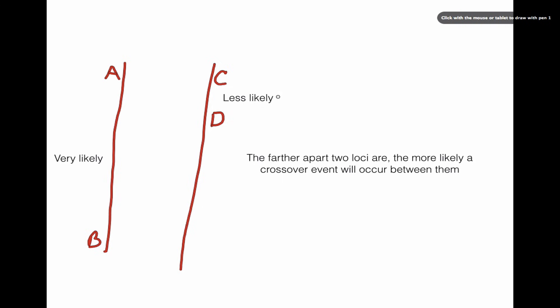All right, now, the farther apart two loci are, remember loci is the location of genes on a chromosome, the farther apart two loci are, the more likely a crossover event will occur between them. So you notice here gene A has a loci right here, and gene B has its locus right here. There's a lot of real estate between them, so there's a lot of places for a crossover break to take place. So that means gene A and gene B are very likely to crossover, whereas genes C and D here are close together. So there's only a few, there's much less real estate here for the break to take place, so much less likely for a crossover event to take place between C and D.